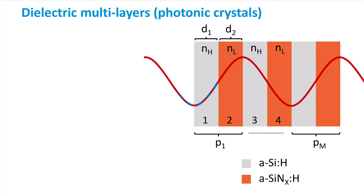At the interface between layers 1 and 2, the wave is reflected without a phase shift, since the refractive index of layer 2 is lower than layer 1. This reflection is indicated by the dashed blue line. The reflection at the next interface, indicated by the solid blue line, does exhibit a phase shift of 1π, since the refractive index of layer 3 is higher than that of layer 2.